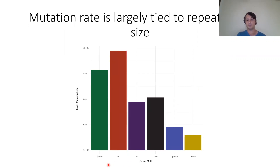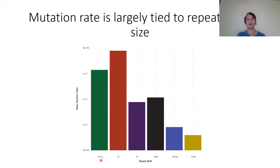Looking at mutation rate by repeat motif size — from mononucleotides in green through hexanucleotides in yellow on the x-axis, with mean mutation rate on the y-axis — mutation rate is largely tied to motif size. Two notable exceptions: mononucleotide repeats are likely underrepresented because of the ~800,000 in the reference, we only averaged about 220,000 genotyped, so mutability is probably underestimated. The other exception is trinucleotide repeats, which show a lower mutation rate — not surprising since they're enriched in coding regions, which are more conserved.